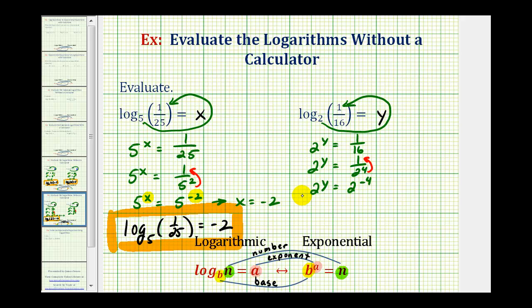And again, these are equal, the bases are the same. Therefore, y is equal to negative four. And if y is equal to negative four, then our logarithm, or log base two of one sixteenth, is equal to negative four.